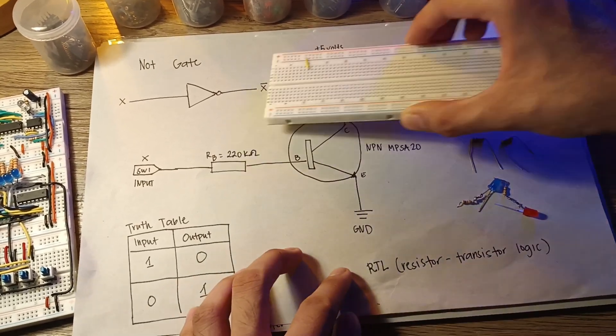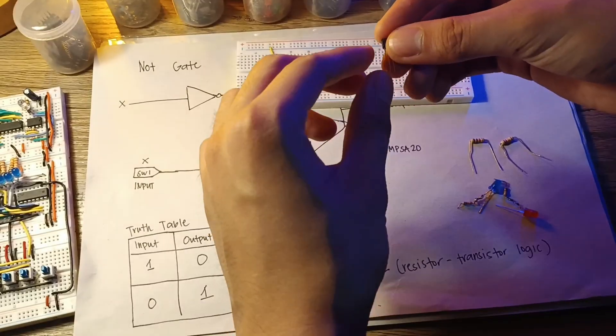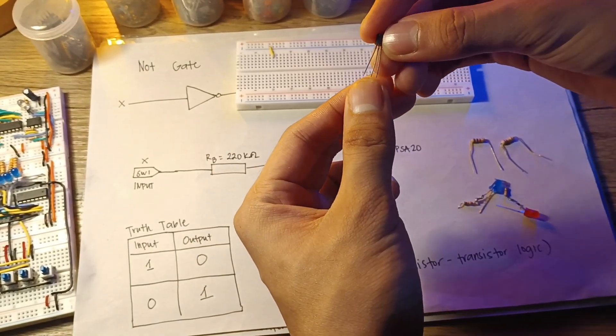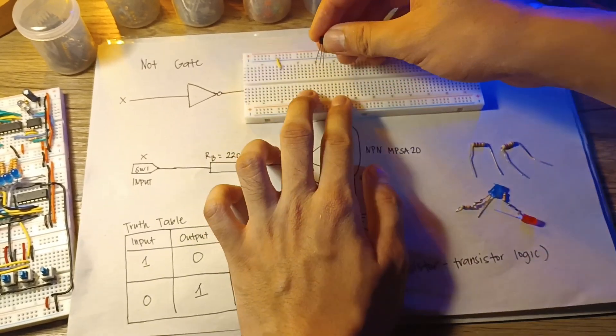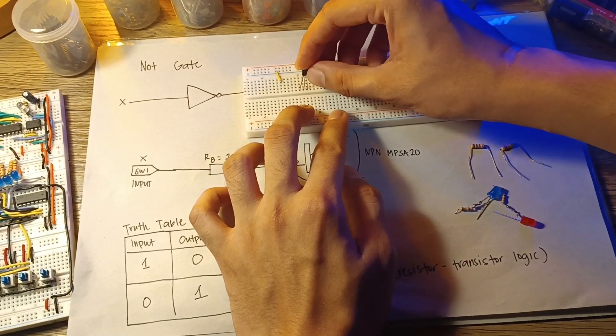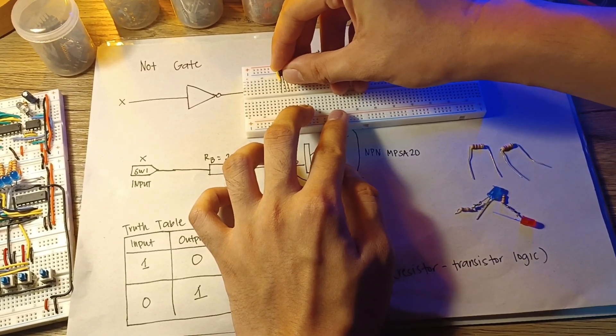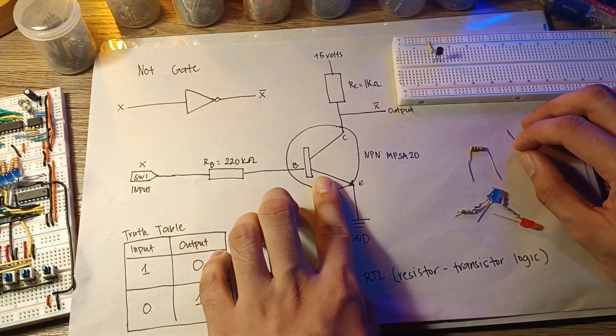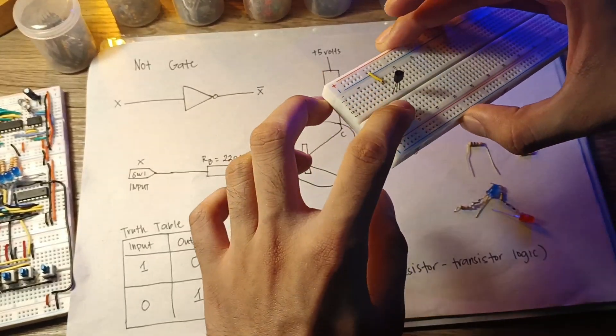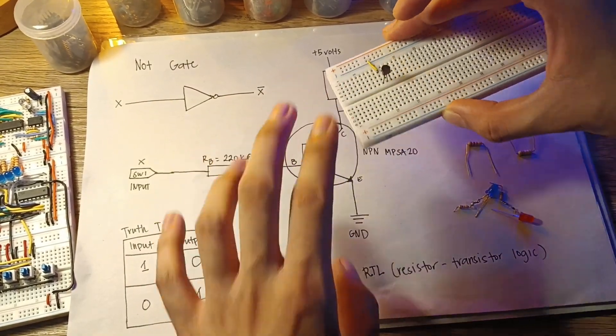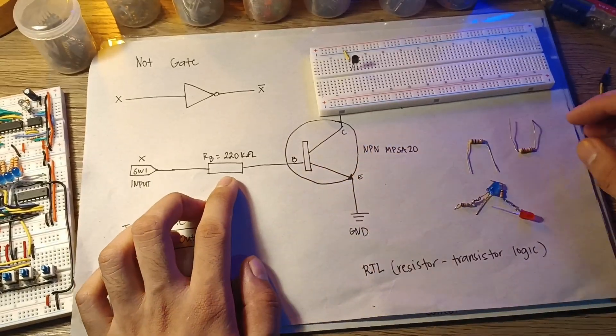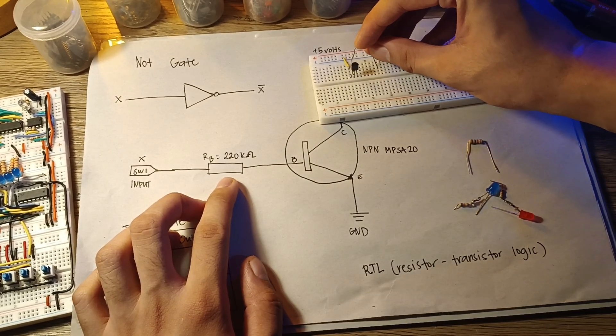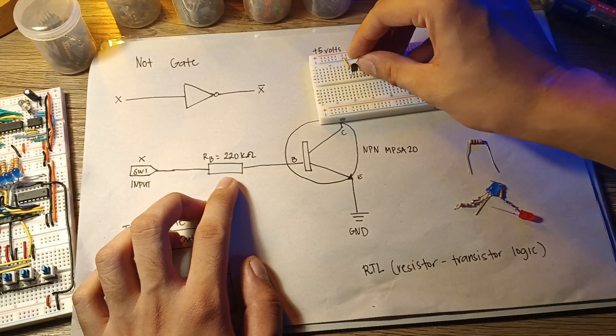Since this is the emitter, this one right here in the left part, and in the middle is the base, and the collector is this, we will put it in our breadboard. In the schematic, the emitter is connected to the ground. The base is connected to the 220kohm resistor and the switch.